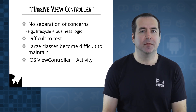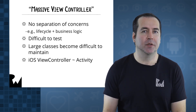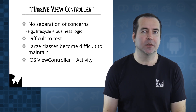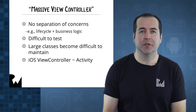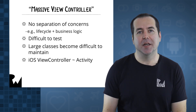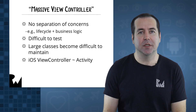The code does not follow the principle of separation of concerns, which recommends that each class stay focused on a small number of separate responsibilities. For example, one main responsibility of activity classes is responding to lifecycle events from the operating system. Adding non-lifecycle business logic to an activity breaks separation of concerns.